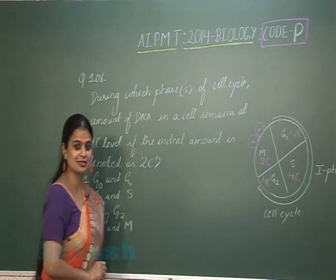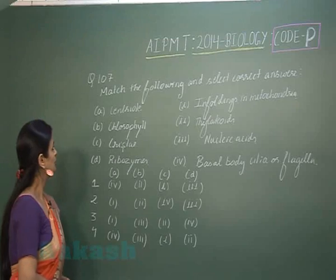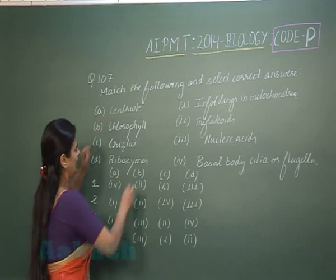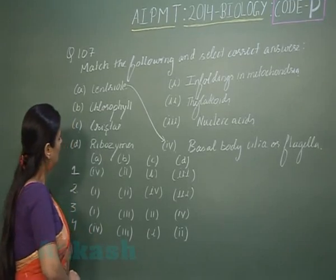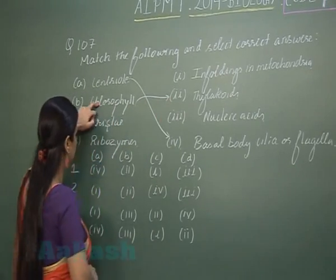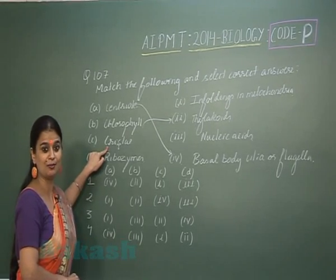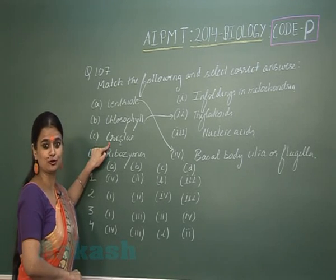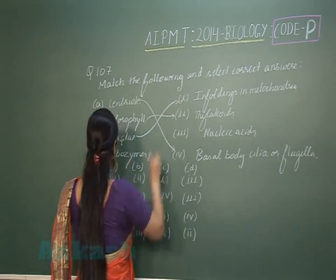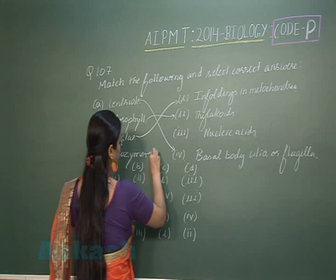So after this, now let's discuss question 107. We have to match the following. Now centriole, you know they can be transformed into basal body. Then chlorophyll, this is a green color pigment which is associated with the membrane of thylakoids. Cristae, they are foldings of inner mitochondrial membrane, which are the site of ETS. Ribozymes, they are RNA-based enzymes, that is nucleic acid-based enzymes.